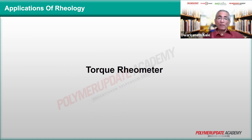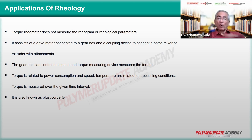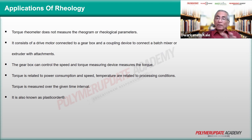Now we go to one very useful application of rheology — the torque rheometer. A torque rheometer is a different kind of equipment where rheology is applied to understand certain parameters. It does not measure the direct rheogram or rheological parameters directly, but it measures parameters connected to rheological behavior. It consists of a drive motor connected to a gearbox and a coupling device that can connect to a batch mixer or extruder. The gearbox controls speed, and torque measurement gives the required information for given applications.